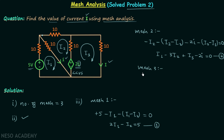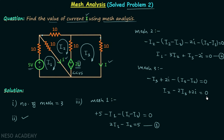Now for mesh number three, starting from a point we have minus i3 times 1. Then we encounter the dependent source and there is a rise in potential, so we write plus 2i. Then we have (i3 minus i2) times 1, and moving back to the same point gives equal to zero. Simplifying, you get i2 minus 2i3 plus 2i equals zero. Let us call this equation number three.